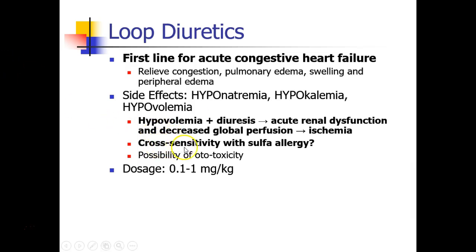Some say that loop diuretics have a cross-sensitivity with sulfa allergy, although in practice we usually give them to patients with sulfa allergy unless there's a very severe reaction. Loop diuretics also have some risk of ototoxicity — injury to the cells in the ear. Typical dosages start between 0.1 and 1 mg per kg, and can vary a lot depending on whether the patient is diuretic-naive or has already been taking diuretics previously.